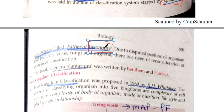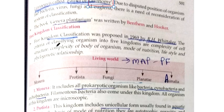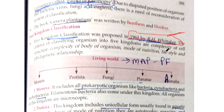Another important book is Genera Plantarum, written by Bentham and Hooker. Five kingdom classification was proposed in 1969 by R. H. Whittaker. The five types are defined on the basis of complexity of the cell, complexity of the body organism, mode of nutrition, lifestyle, and phylogenetic relationship.